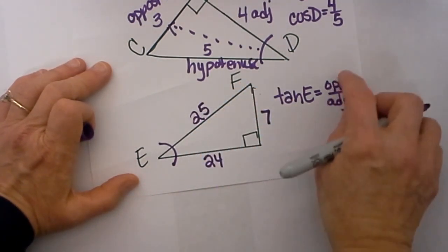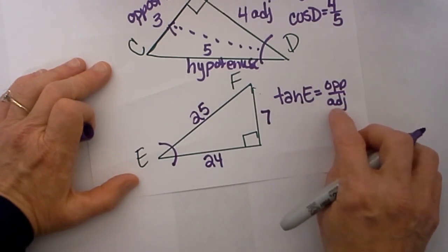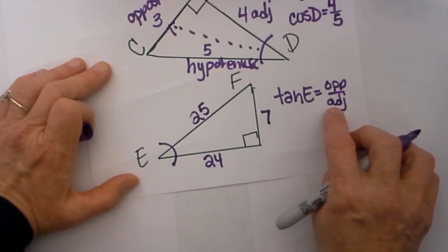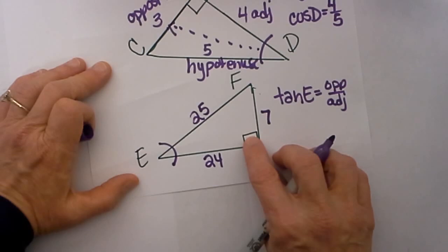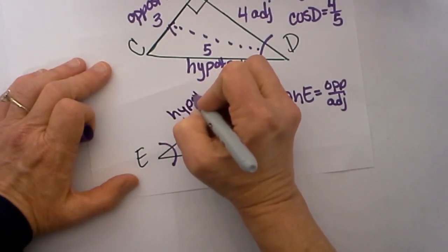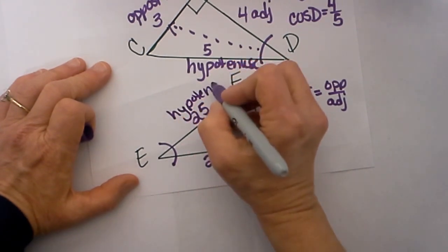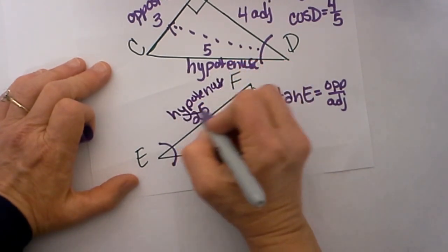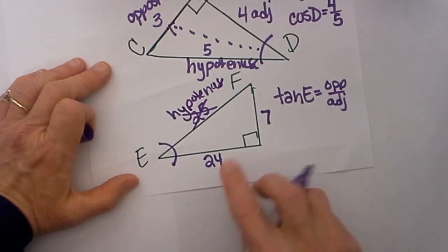So I need to set up the opposite over the adjacent. I am not going to use my hypotenuse, and that is the easiest one to identify, so let's look at the right angle. The 25 is opposite that, so that is my hypotenuse. In this problem I am not even going to use it.